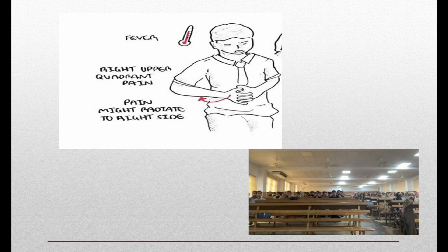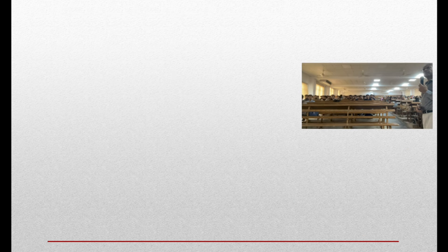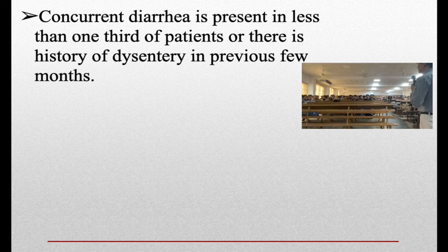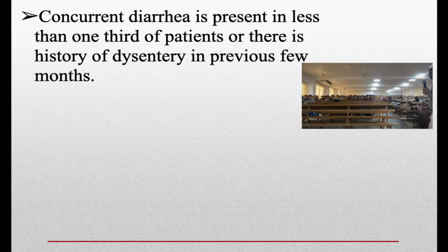Amoebic liver abscess is one of the differentials of PUO — pyrexia of unknown origin. Diarrhea may not be present in all cases; only about one-third of patients may have diarrhea. If the patient has diarrhea, you suspect colitis with secondary liver involvement, but some patients may have no diarrhea. There may be a history of dysentery in the previous few months, or even that may not be present.